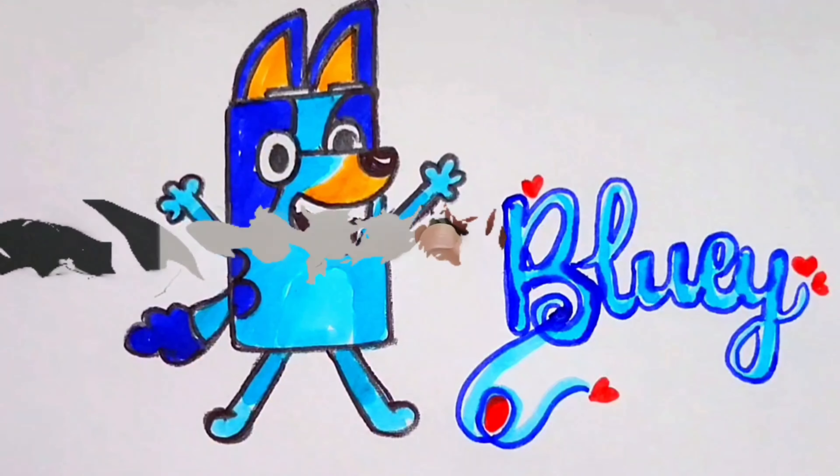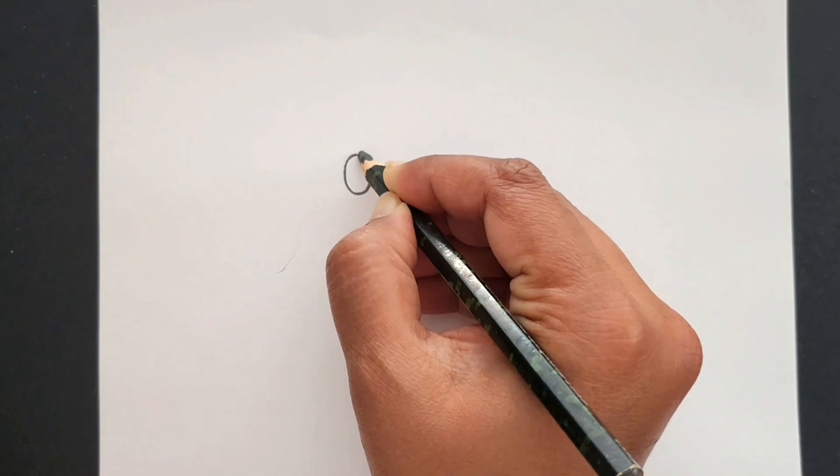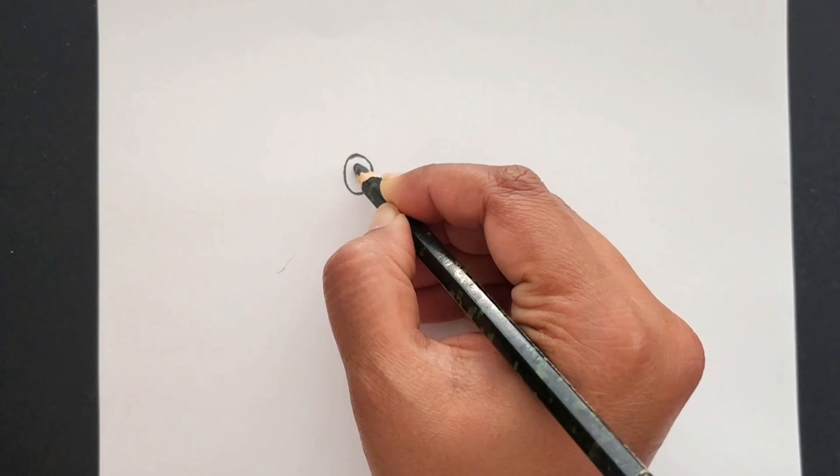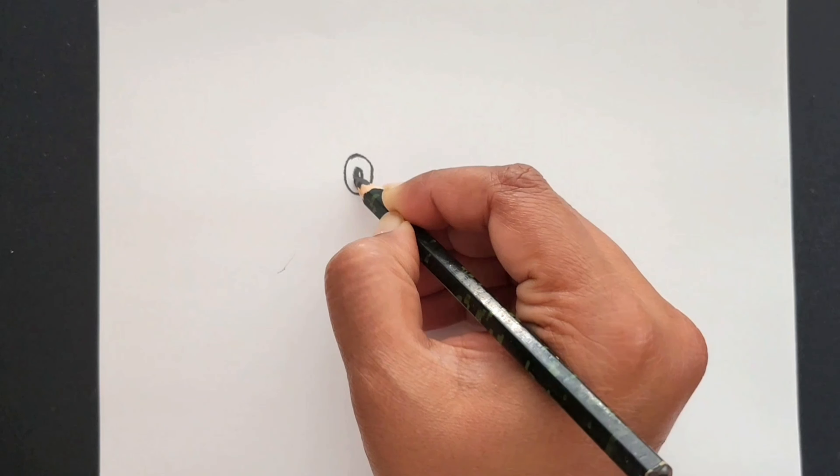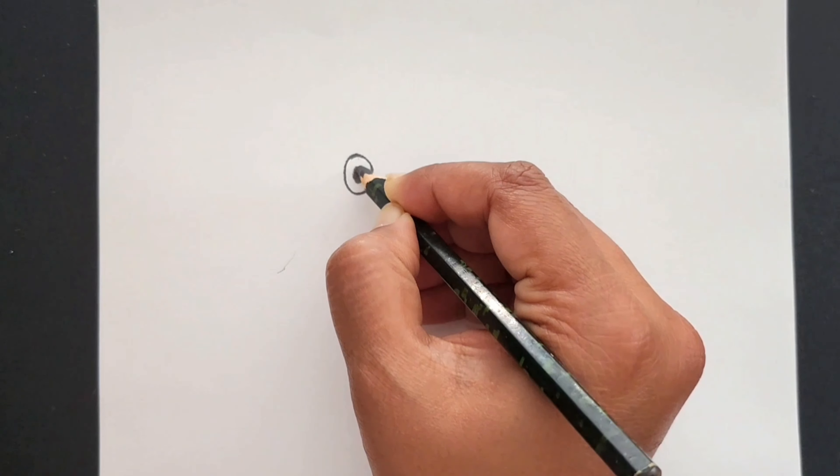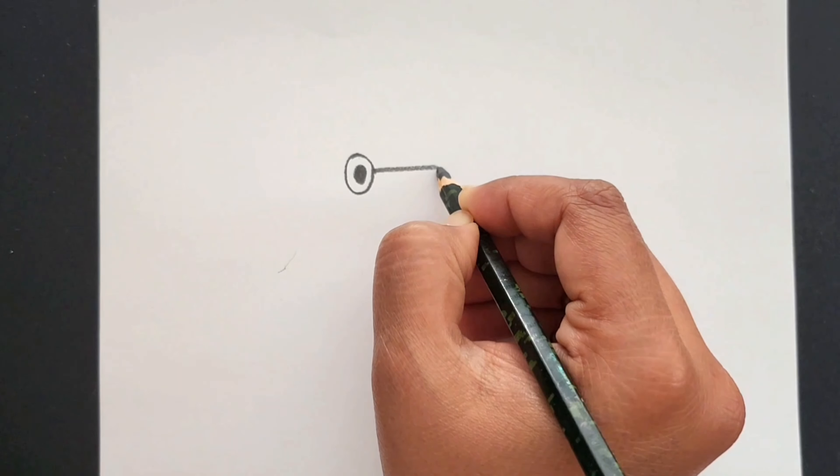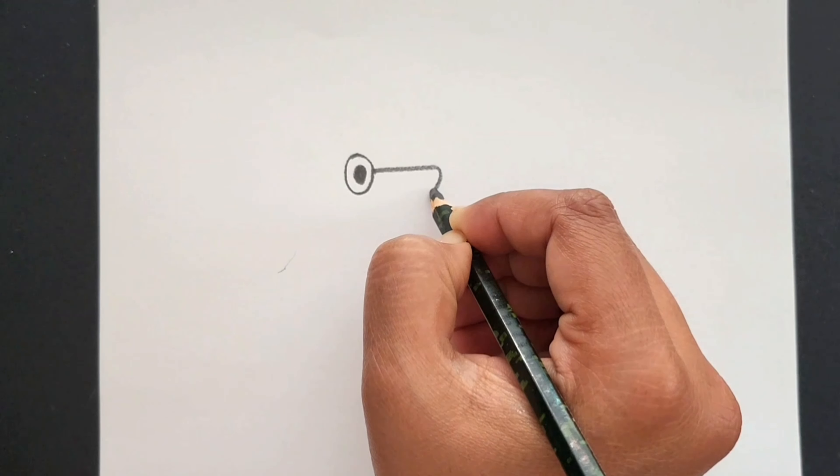First I'm going to draw her eye, so we're gonna draw an oval shape. Now draw the pupil. Okay, now let's draw her nose. Starting here, draw a straight line out then curve back down.